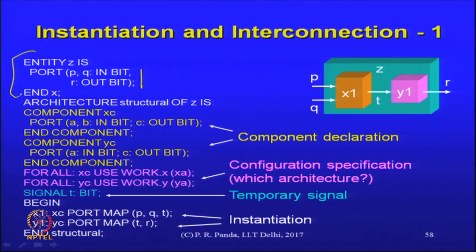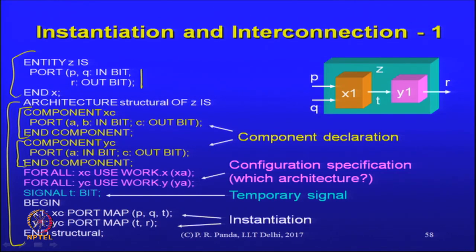In the architecture, we have what are called component declarations. XC and YC are just the component declarations corresponding to X and Y entities that we have written. They are called XC and YC just to indicate that we can call them whatever name — it does not have to be the same name as the entity. The port list here is what is the port list of X; the port list here is the port list of Y. There is a configuration specification where we say for all instances of that XC component, you use work.X — work refers to a library — and X is that entity that we had designed earlier; X is the entity, XA is the architecture.